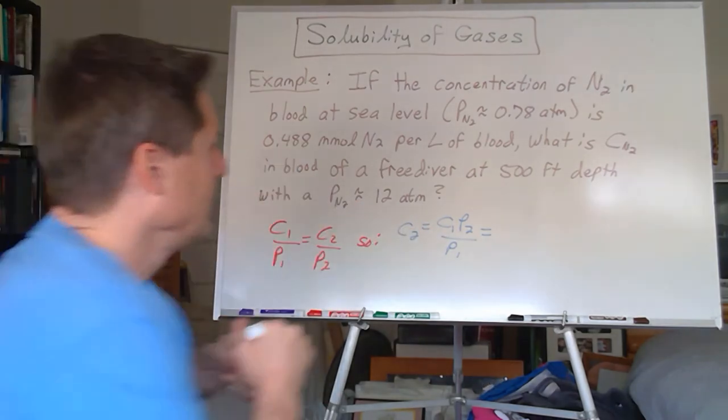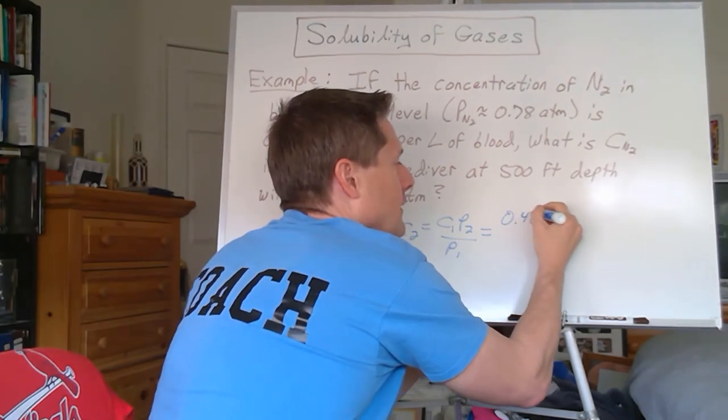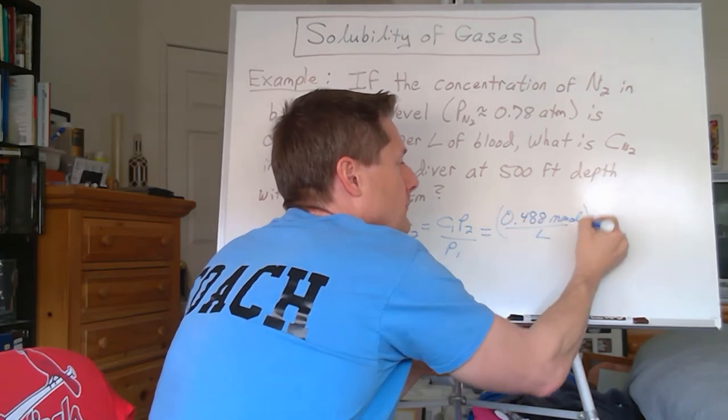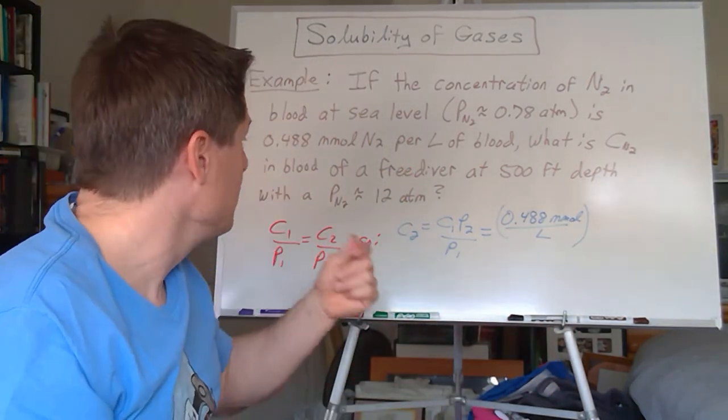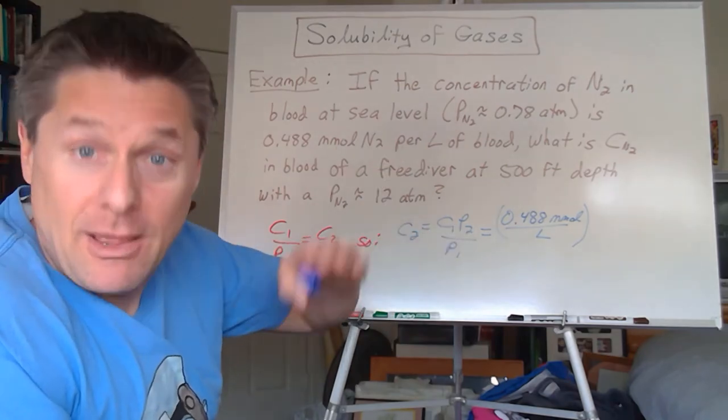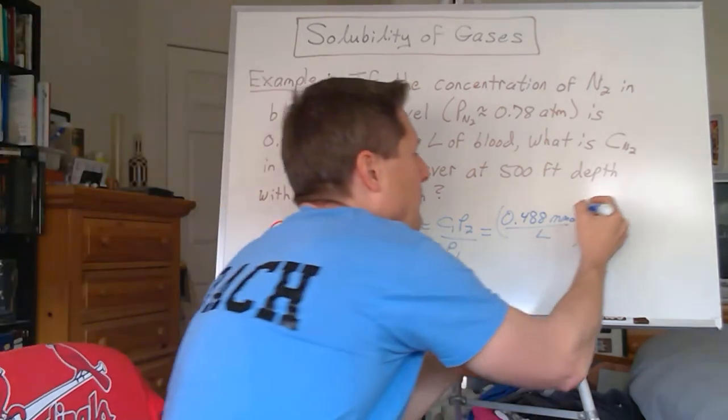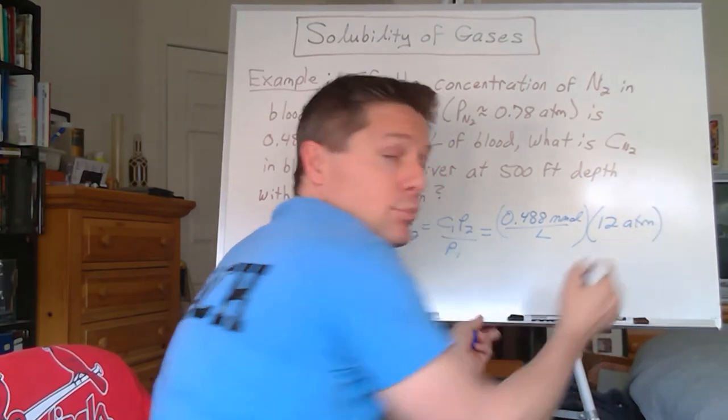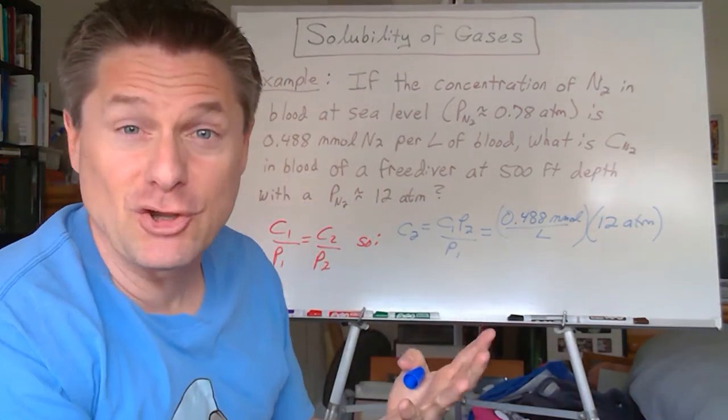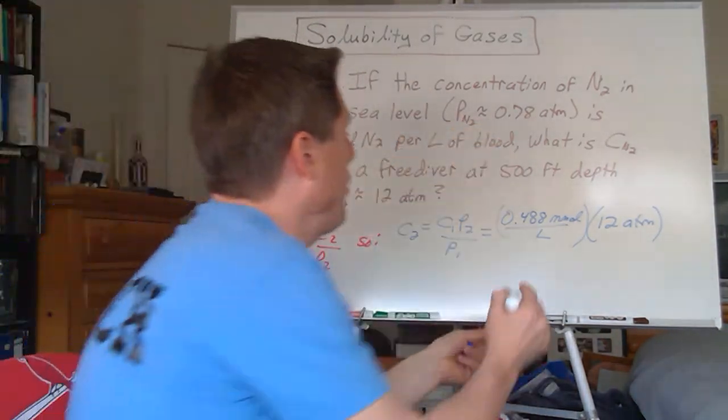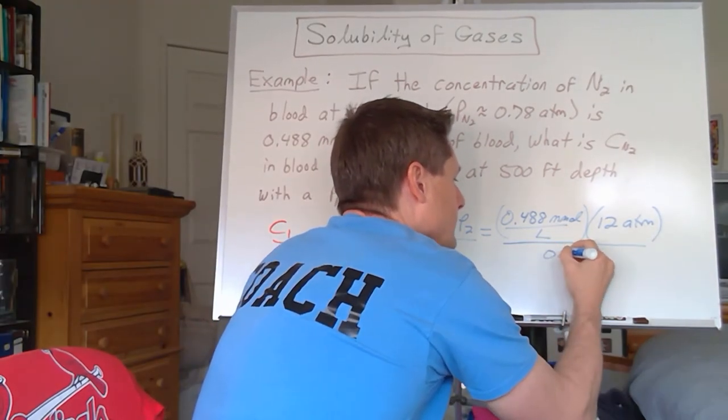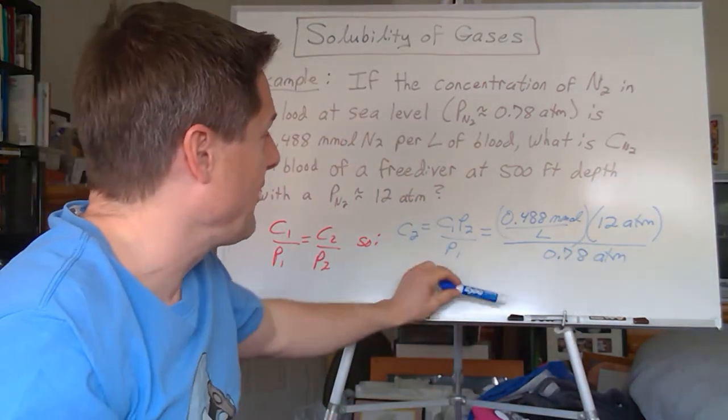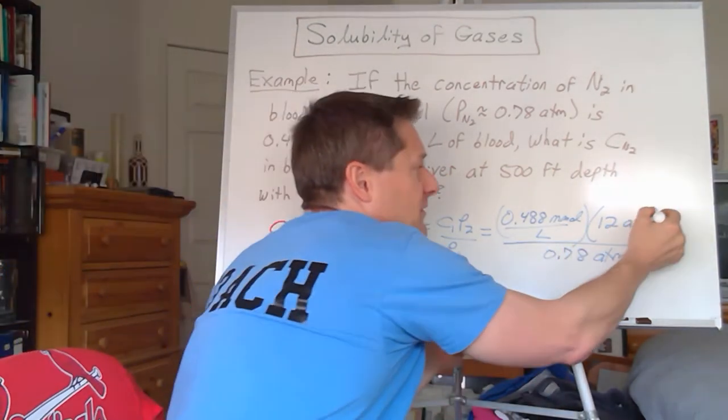So what's C1, 0.488? I'm just going to go millimoles per liter, understanding that's millimoles of nitrogen per liter of blood. Let's multiply that by the higher pressure as you go down, 12 atmospheres. And I could have done those pressure units in any pressure unit, doesn't matter. As long as the pressure units are the same, though, cancel out. P1 was 0.78. So really easy math, but there's some fun applications of this. So we can cancel out atmospheres.